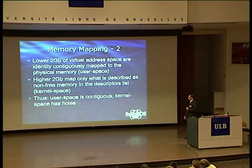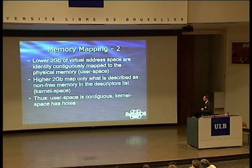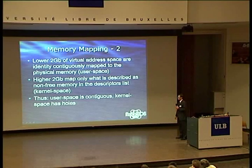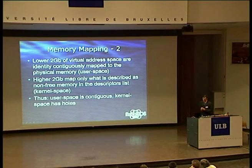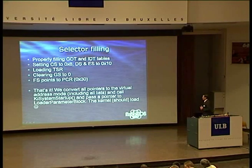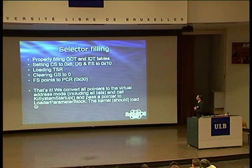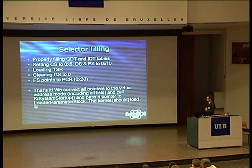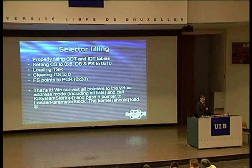The lower 2 gigabytes of virtual address space are identity and contiguously mapped as physical memory — the user space. The higher 2 gigabytes are called kernel space and are mapped only to what is really allocated there. So user space is contiguous and kernel space has some holes. As the last thing, we have to properly fill selectors: starting with GDT and IDT tables, set CS, DS, and TSS to proper values, load TSS, clear GS, and point FS to PCR. Only once we have done all this can we actually boot the kernel, and it should work.